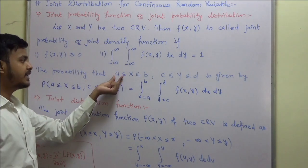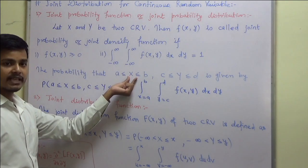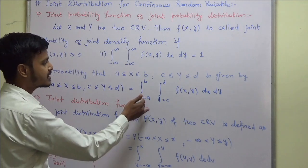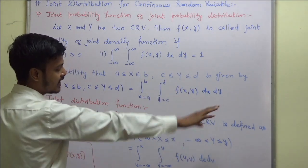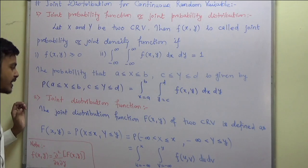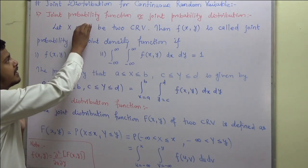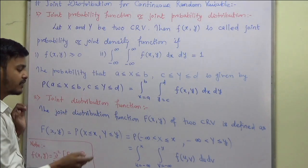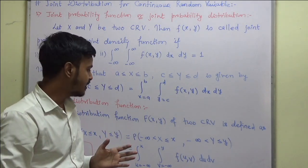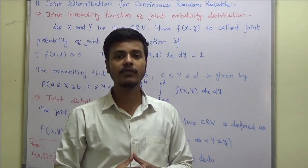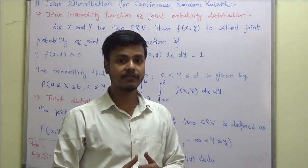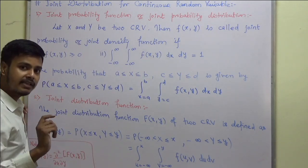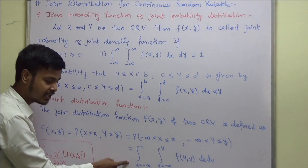If you wish to find the probability where x ranges from a to b and y ranges from c to d, it is simply the double integration from a to b and c to d of f(x, y) dx dy. Likewise, alongside the probability function, we have the definition for joint distribution function, which we have already seen for a single continuous random variable with one integration — here we have two integrations.